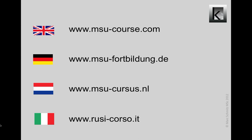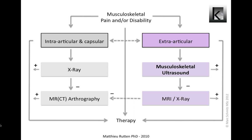MSU is the preferred imaging technique in extra-articular soft tissue problems like muscle, tendon, ligament, bursa and other structures. Capsular problems can also be assessed with MSU, but MSU is somewhat more limited here. Intra-articular structures are hard to assess with MSU — sometimes it's even impossible.